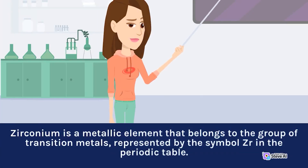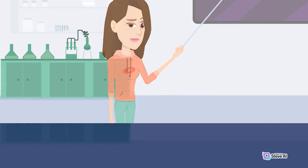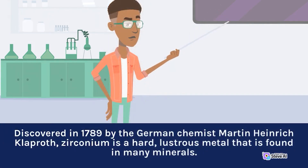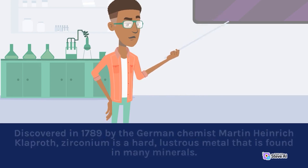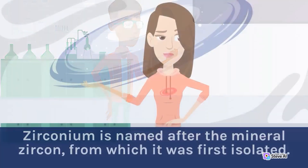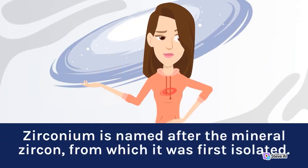Zirconium is a metallic element that belongs to the group of transition metals, represented by the symbol Zr in the periodic table. Discovered in 1789 by the German chemist Martin Heinrich Klaproth, zirconium is a hard, lustrous metal that is found in many minerals. Zirconium is named after the mineral zircon, from which it was first isolated.